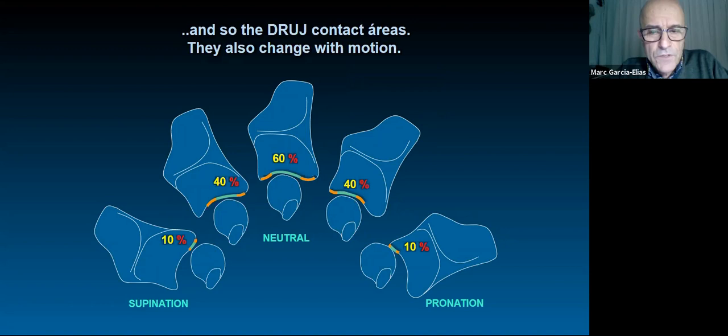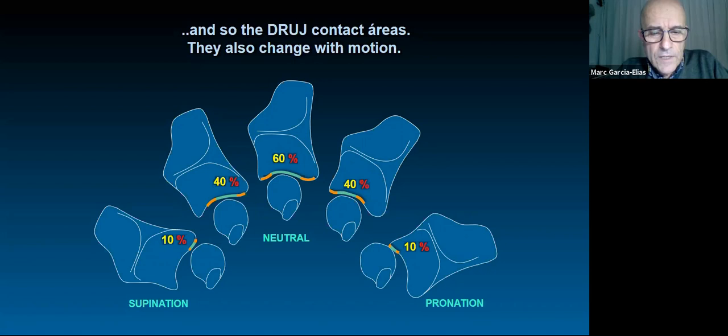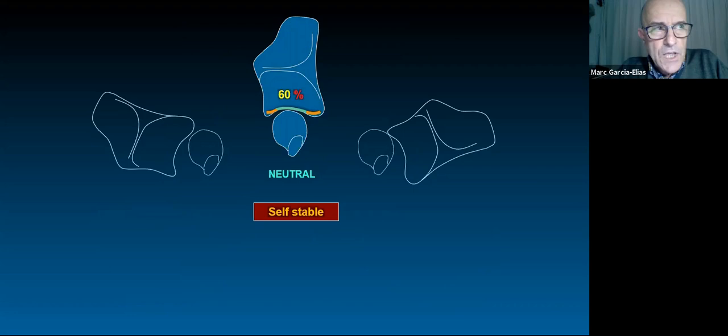The surface of contact also depends on the amount of pronation-supination. As clearly demonstrated — coming from Abecassis — in neutral position only 60 percent of the articular portion is in contact, while at the extremes of pronation-supination less than 10 percent of that contact remains. In neutral position, this is really a self-stable articulation; there is no need for any stabilizing agent. We have convexity proximally and slight concavity distally — that is enough.